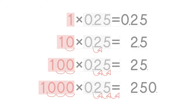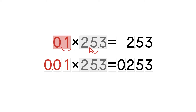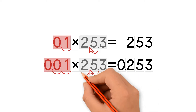But what happens when we multiply a number by one-tenth or one-hundredth? Let's take a look at two examples. Each example has 25.3 as a factor. In the first example, we multiply by one-tenth. When you multiply by one-tenth, the decimal point moves one place to the left. In the next example, we multiply by one-hundredth. When you multiply by one-hundredth, the decimal point moves two places to the left.